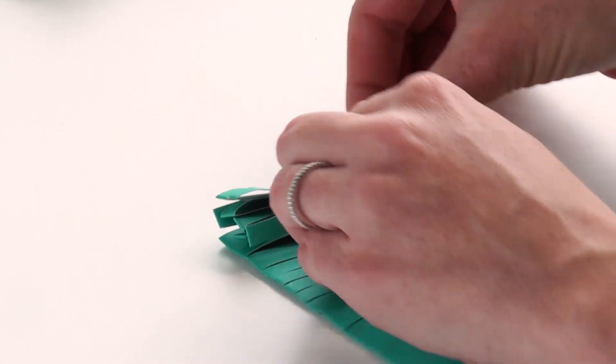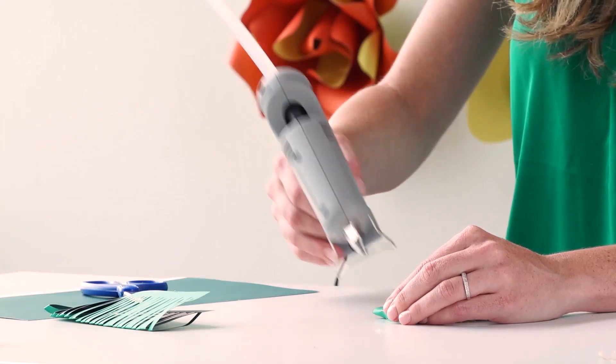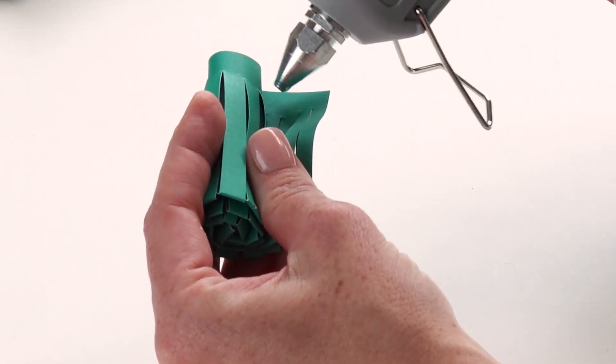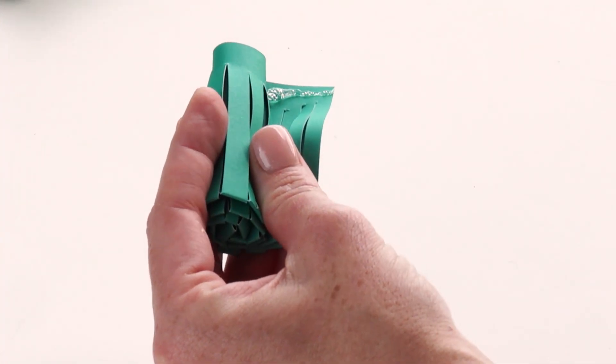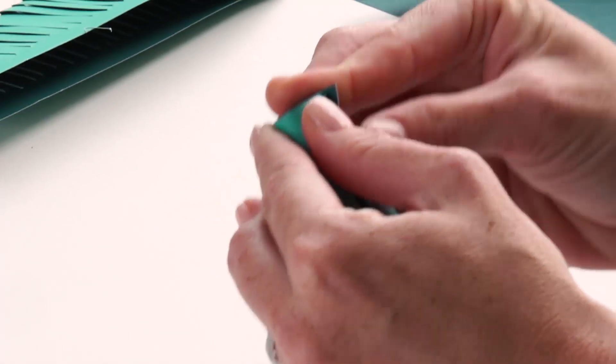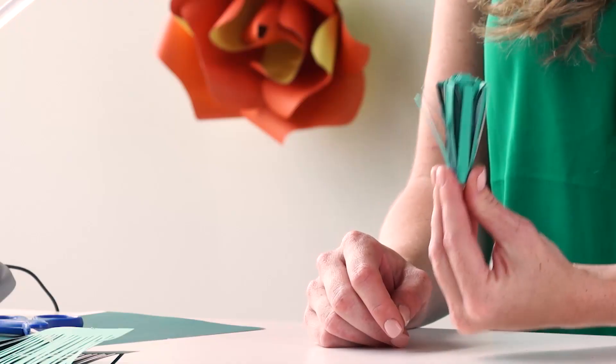As you go along, you're going to add a little bit of glue every little bit. When you come to the tail, put your glue there and then roll it all the way around, holding it in place. Your flower will then look like this.